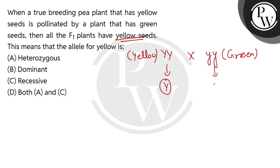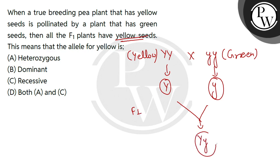Capital Y will come from one parent and small y from the other. When I cross these two, the F1 generation will be Y-y. This is a heterozygous condition. Here Y is dominant, and because Y is dominant, you will get a yellow seed.